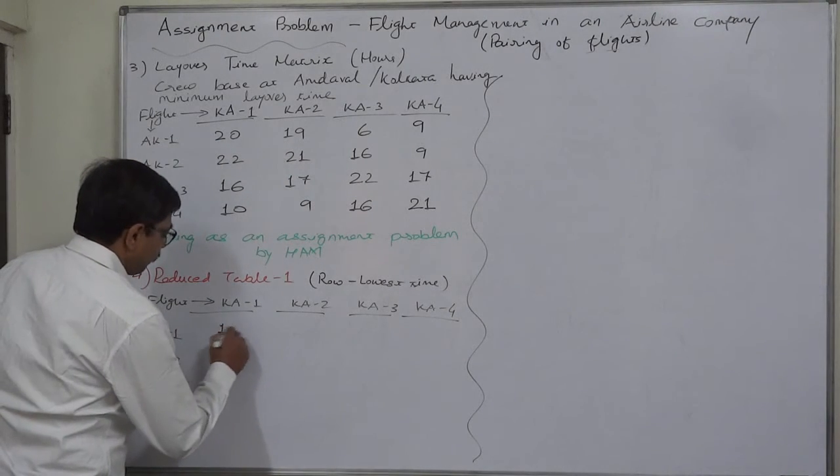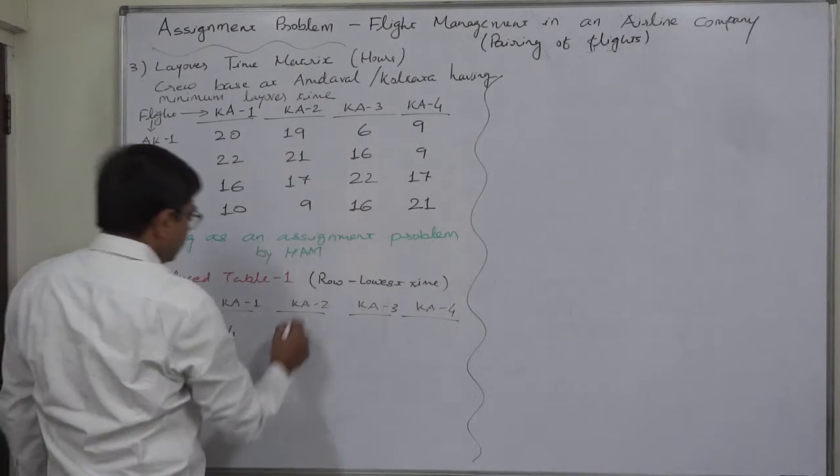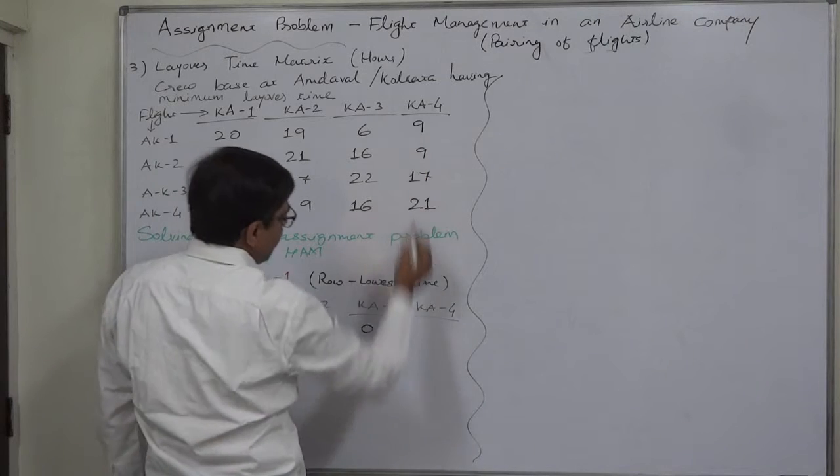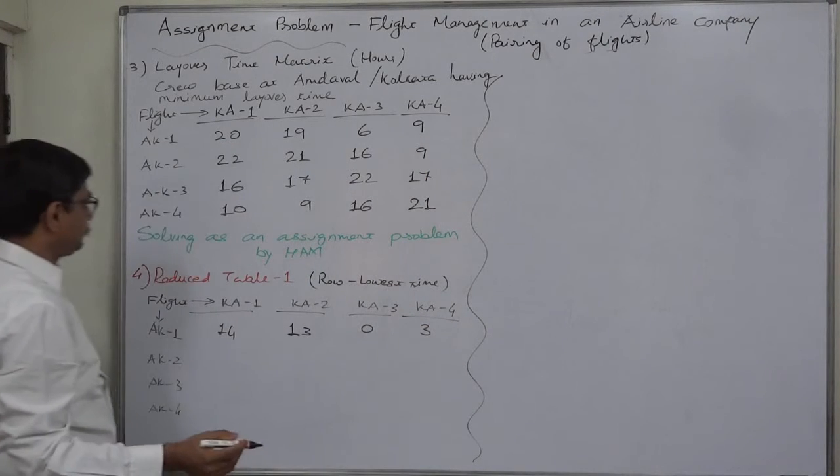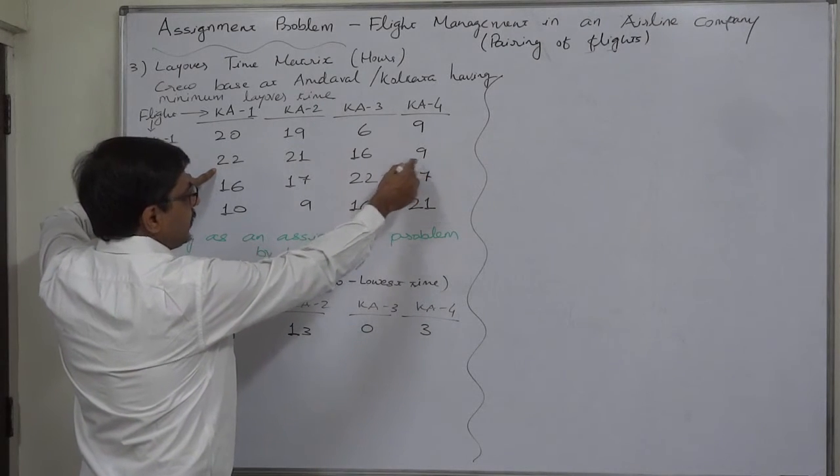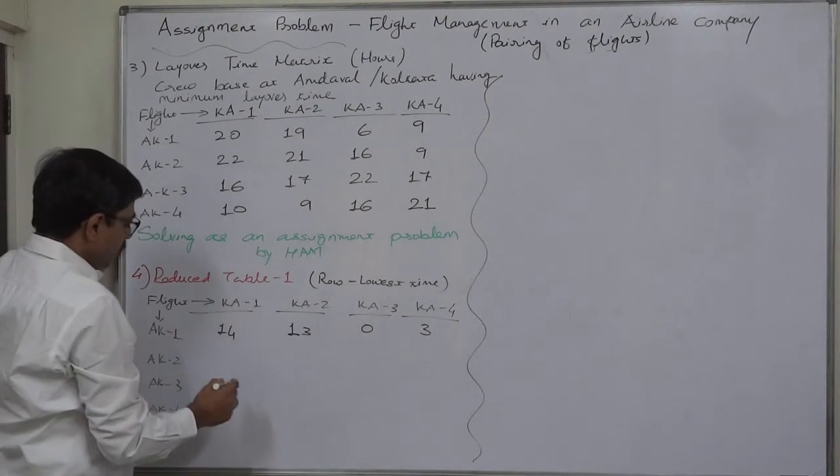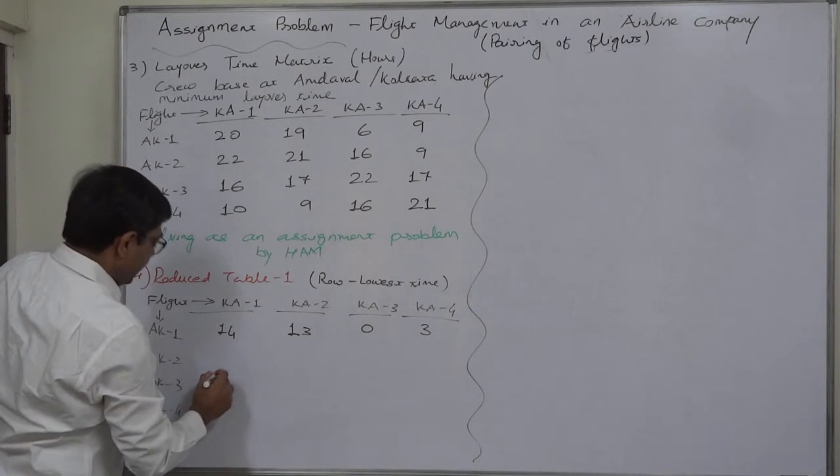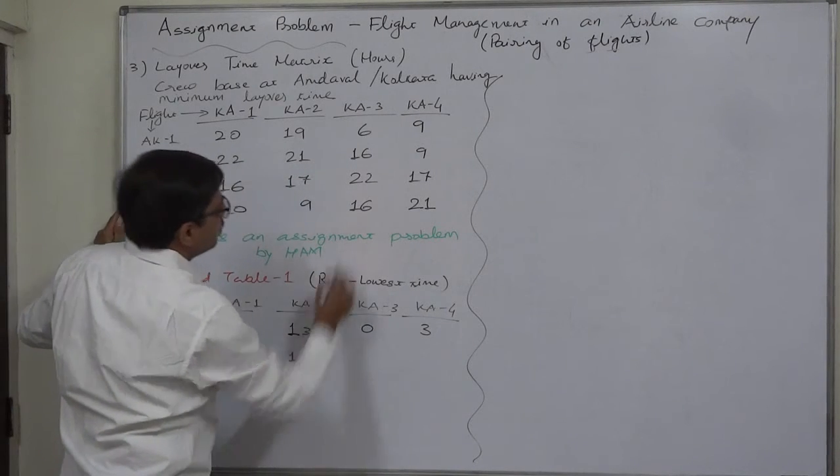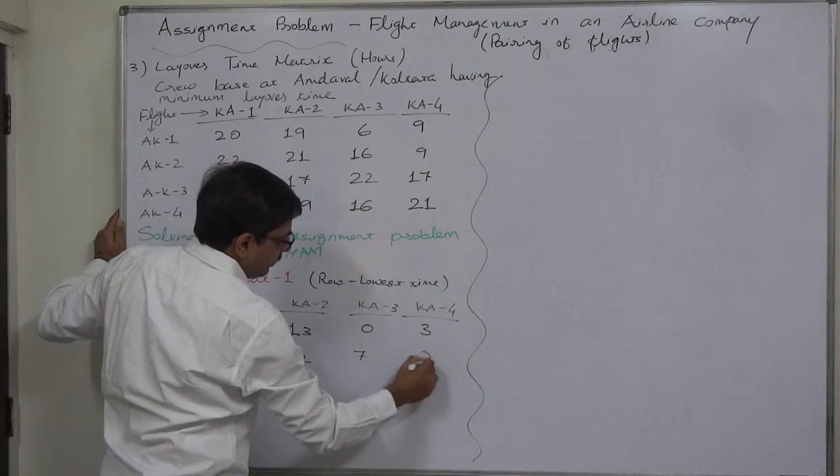In the first row the lowest time is 6. 20 minus 6 is 14. 19 minus 6 is 13. 6 minus 6 is 0. 9 minus 6 is 3. Row 2, lowest time is 9. We are going to subtract 9 from all the values. 22 minus 9 is 13. 21 minus 9 is 12. 16 minus 9 is 7, and 9 minus 9 is 0.